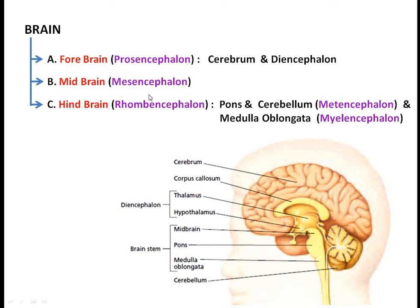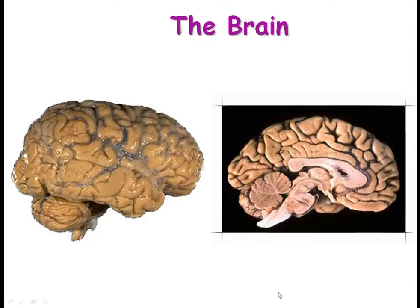After the midbrain, the pons, medulla oblongata, and cerebellum are present. Pons and cerebellum are collectively called the metencephalon, and the medulla oblongata is called the myelencephalon. The brainstem consists of the midbrain, pons, and medulla oblongata. It is called the brainstem because other regions of the brain depend upon it — it acts like the stem of a tree. The pons, medulla oblongata, and cerebellum are parts of the hindbrain.